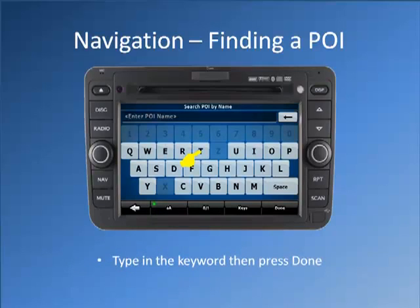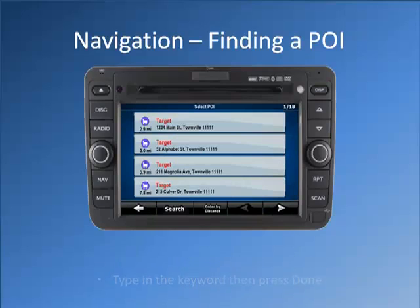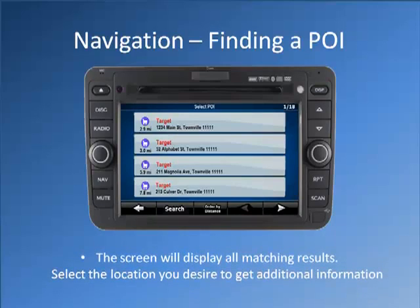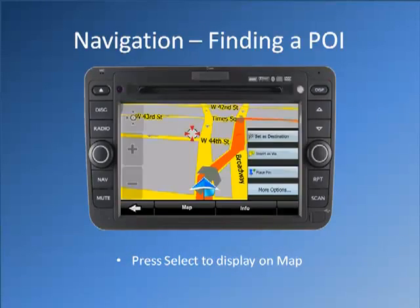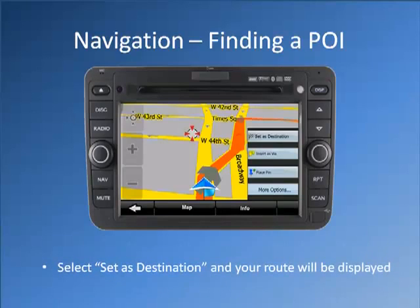Type in the keyword, then press Done. The screen will display all matching results. Select the location you desire to get additional information. Press Select to display on map. Select Set as Destination and your route will be displayed.